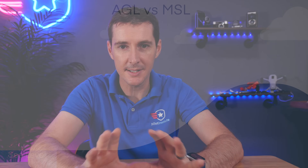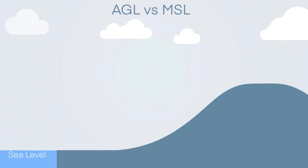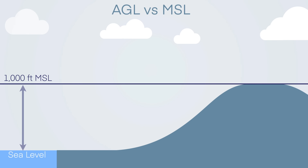Let's take a look at this graph, because it's the easiest way to explain the difference between AGL and MSL. Think about AGL as height above the ground — I'm six feet tall, so the top of my head is always six feet above the ground. If we have a hill that is a thousand feet above sea level, that's a thousand feet MSL. If I'm standing on top of that hill, the top of my head is at 1,006 feet MSL, but it's still only six feet above the ground.